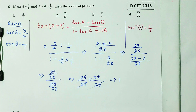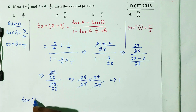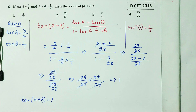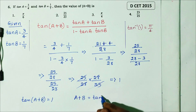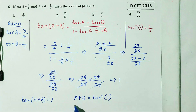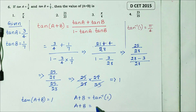So tan(A + B) equals 1. Taking tan inverse of both sides, A plus B equals tan inverse of 1.